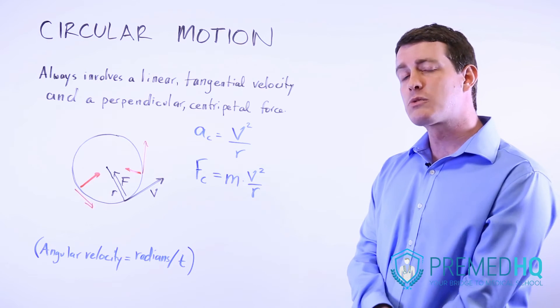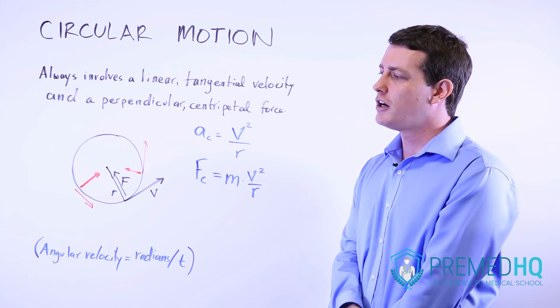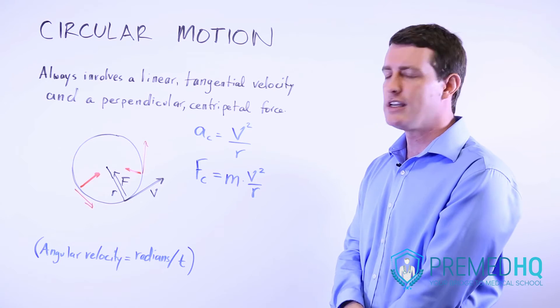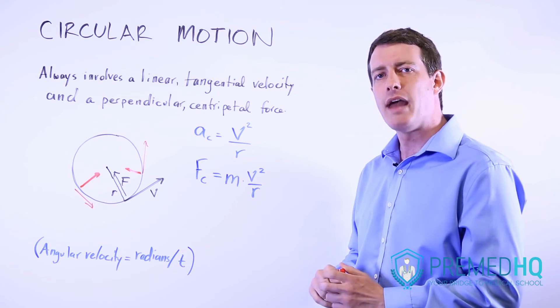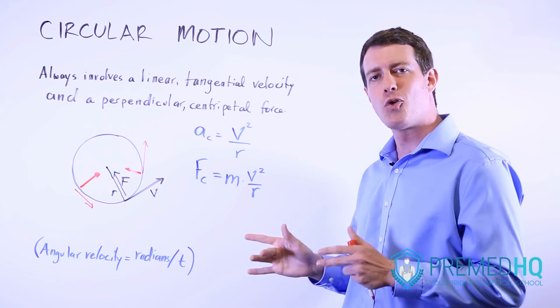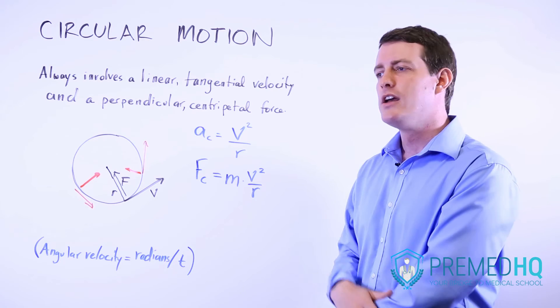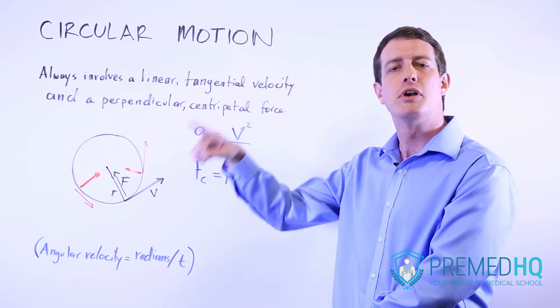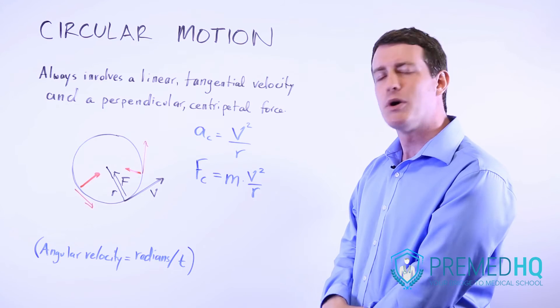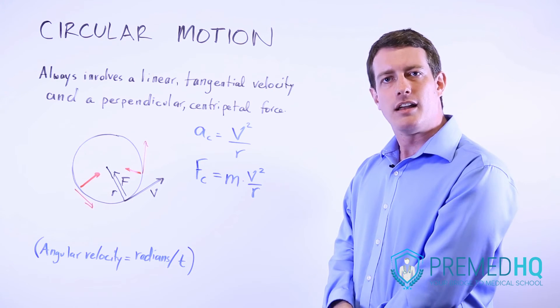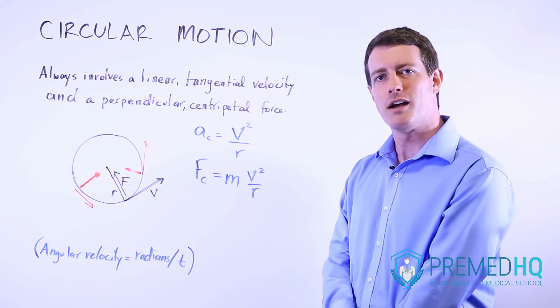Other cases where circular motion might be seen are cases where you have a force that is consistently perpendicular. For example, magnetism. Magnetism involves a force that is perpendicular to your velocity vector. So oftentimes, a charged object can experience circular motion based on the magnetic forces that are present. That's another case where that will be exhibited.